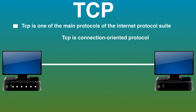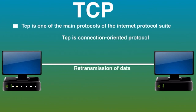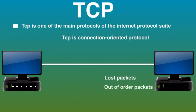TCP ensures sequencing of data, which means that data packets arrive in order at the receiving end. Retransmission of lost data packets is also possible with TCP — if a data packet goes missing, TCP will resend it. TCP includes a mechanism to solve many problems that arise from packet-based messaging, such as lost packets, out-of-order packets, duplicate packets, and corrupted packets.